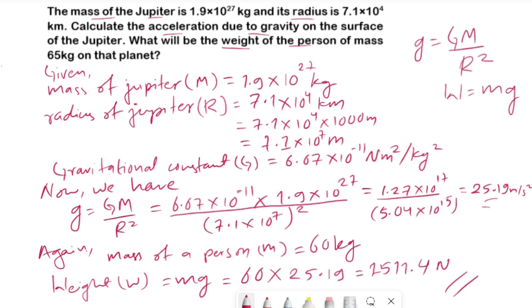In this way we can calculate the acceleration due to gravity not only of Jupiter but of any heavenly body like the Moon, Earth, etc. I hope you learned how to calculate the acceleration due to gravity from this video. Stay tuned for more such videos and please subscribe to the channel if you found it helpful. Thank you.